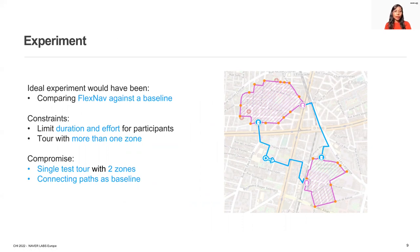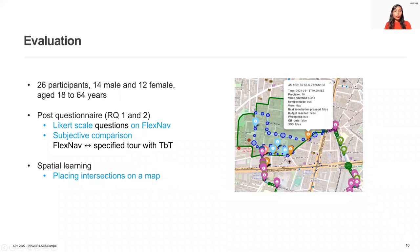As seen in the figure, we crafted one test tour with a total distance of roughly five kilometers, including two runnable zones with a suggested exploration distance of 1.5 kilometers each in different neighborhoods connected by fixed paths. Both zones were a mix of green and low-traffic areas and contained a significant set of alternative paths to enable meaningful exploration. Our tour included three connecting paths covering almost two kilometers where participants experienced turn-by-turn guidance, which we used as a baseline. For the experiment, we recruited 26 participants who were unfamiliar with the test location.